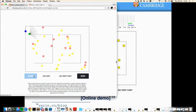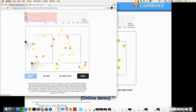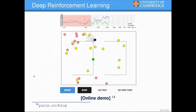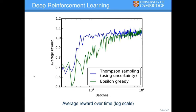In green we have the epsilon-greedy agent; in blue the Thompson sampling agent. After letting them run long enough — this is on a log scale — Thompson sampling converges within about 30 iterations, while epsilon-greedy takes hundreds of iterations to reach the same average reward. That's one very nice application: speeding up reinforcement learning. The second application, again by Kendall and Cipolla, is using uncertainty information for image localization.